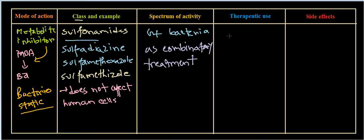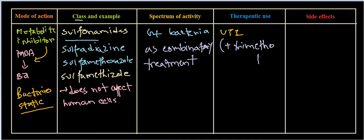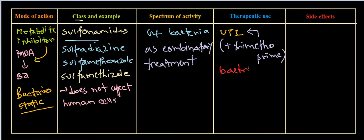The major therapeutic use of sulfonamides is to treat UTI — urinary tract infection. In combination therapy for UTI, they are combined with trimethoprim. This combination of sulfonamide with trimethoprim is called Bactrim, and we can use Bactrim against UTI infections.